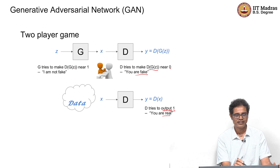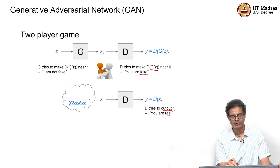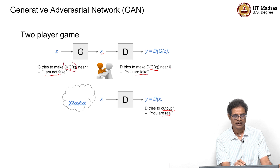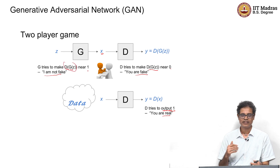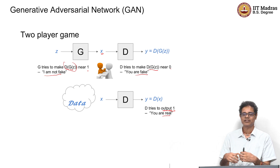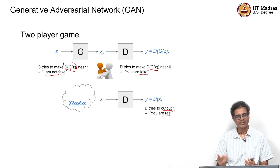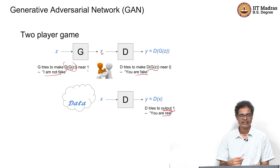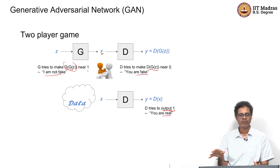On the other hand, the generator tries to produce output in such a way that it can fool the discriminator. It tries to say it is not fake, meaning it tries to push the discriminator's output near to one. So this is the game they are playing — the generator tries to defeat the discriminator by producing output the discriminator will think is real, while the discriminator tries to catch the generator.